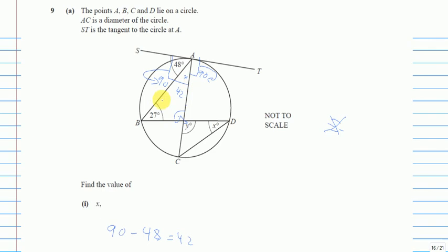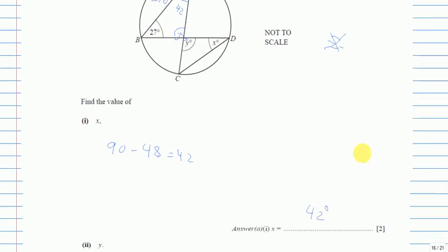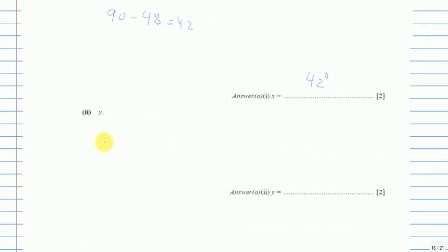Out of the whole 180, if I take out 27 and 42, I will get the remaining angle. So it will be 180 minus 42 minus 27, which gives 111 degrees.